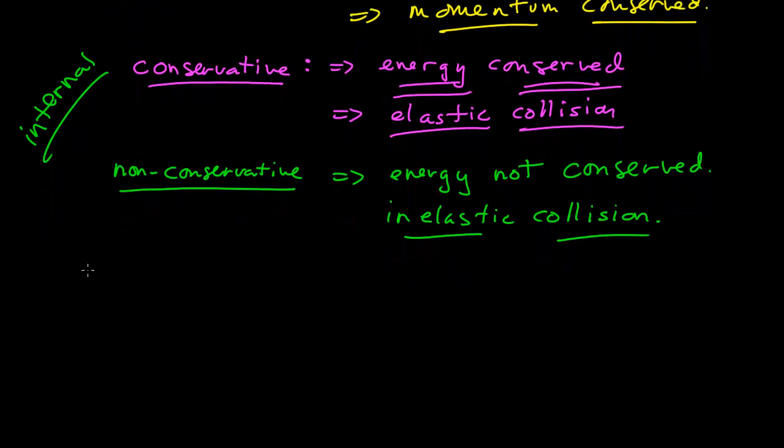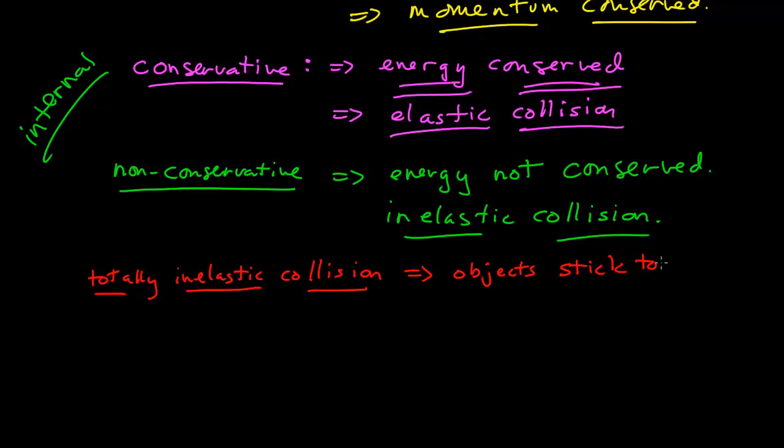So, there's one other special type of collision we want to talk about, and that is a totally inelastic collision. So, a totally inelastic collision between two objects has one very obvious characteristic, and that is that the objects stick together. Now, that's a very easy way to identify that you have a totally inelastic collision. You're given a problem where you have two objects. They collide and they stick together. That's a red flag. That's a totally inelastic collision.